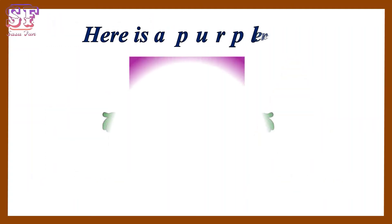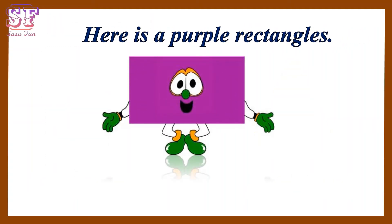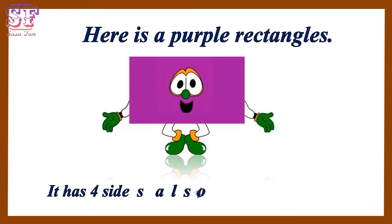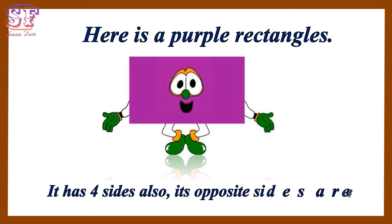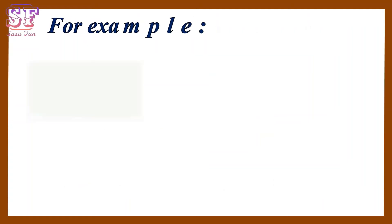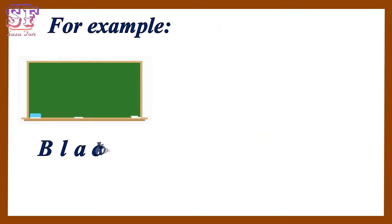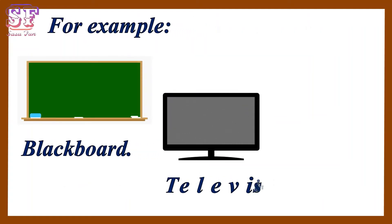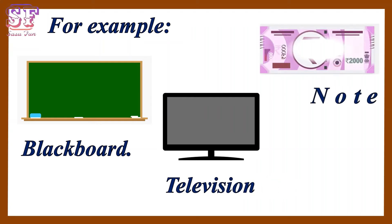Here is a purple rectangle. It has four sides. Also, its opposite sides are equal. For example, blackboard and notebook.